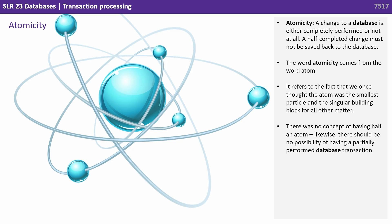Atomicity means a change to a database is either completely performed or not at all — a half-completed change must never be saved to the database. The word atomicity comes from the word atom, referring to the fact that we once thought the atom was the smallest indivisible particle. Likewise, there should be no possibility of having a partially performed database transaction.